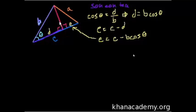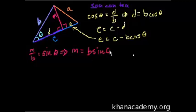And what's this magenta side going to be? Well let's call this magenta side M for magenta. Well M is opposite to theta. So what relationship gives us M over B? Or involves the opposite and the hypotenuse? Well that's sine, opposite over hypotenuse. So we know that M over B is equal to sine of theta. Or that M is equal to B sine of theta.